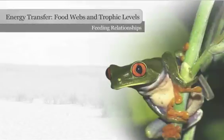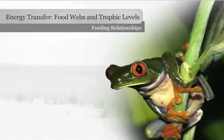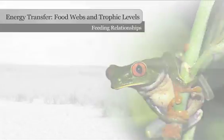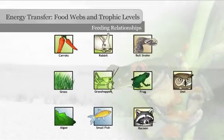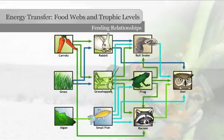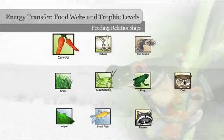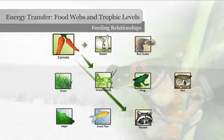It can be difficult to use food chains like those you studied in the first lesson of the energy transfer series to depict complex feeding relationships. One organism can potentially belong to multiple food chains. Take carrots for example. Carrots not only support rabbits, but also grasshoppers and raccoons.